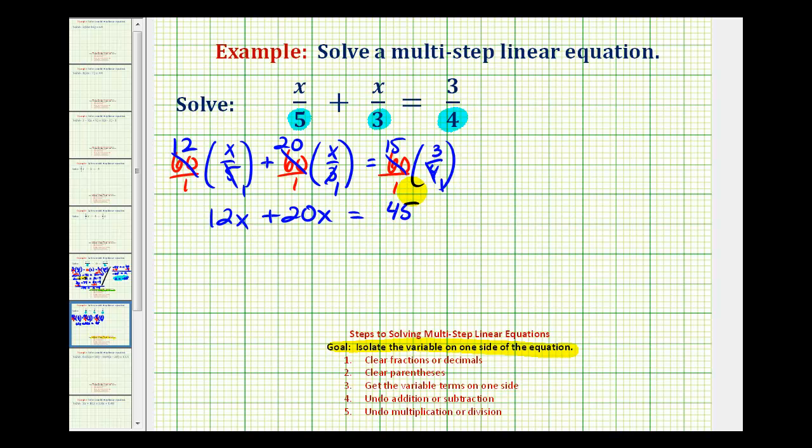Now we'll combine the like terms. Here we have twelve x plus twenty x, that would be thirty-two x equals forty-five. And now to isolate x on the left side, we'll have to undo this multiplication, so we'll divide both sides by thirty-two.